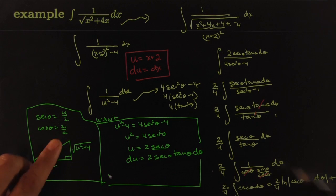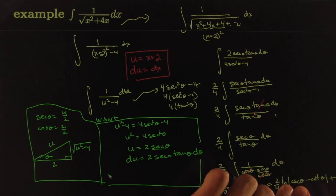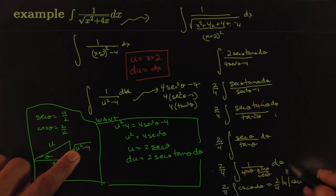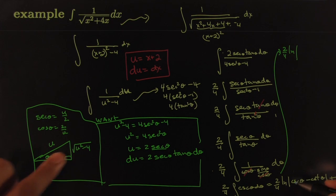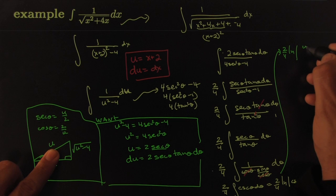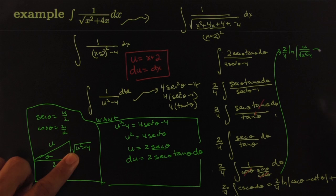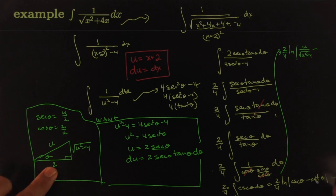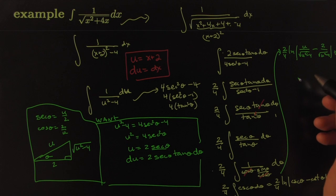Using the triangle, cscθ = hypotenuse/opposite = u/√(u²−4), and cotθ = adjacent/opposite = 2/√(u²−4). The final answer is (2/4) ln|u/√(u²−4) − 2/√(u²−4)| + C. Since u = x + 2, substitute back to express everything in terms of x.